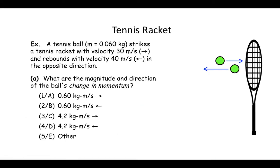Here's another example to work on. Imagine a tennis ball of mass 0.06 kg that strikes a tennis racket with a velocity of 30 m/s to the right. It rebounds with a velocity of 40 m/s to the left. The ball has an initial momentum — velocity times mass — and then rebounds with a new final momentum. The first question is: what are the magnitude and direction of the ball's change in momentum? Just like the cart example, take the final momentum minus the initial momentum, keep track of signs, and you'll get the answer.